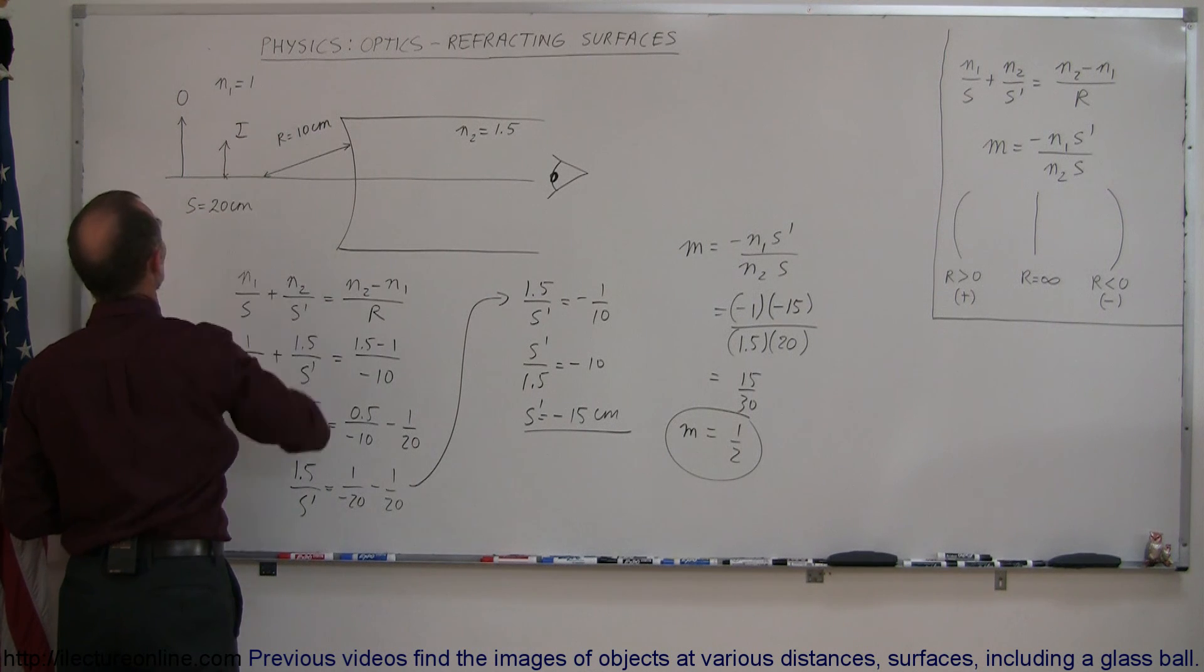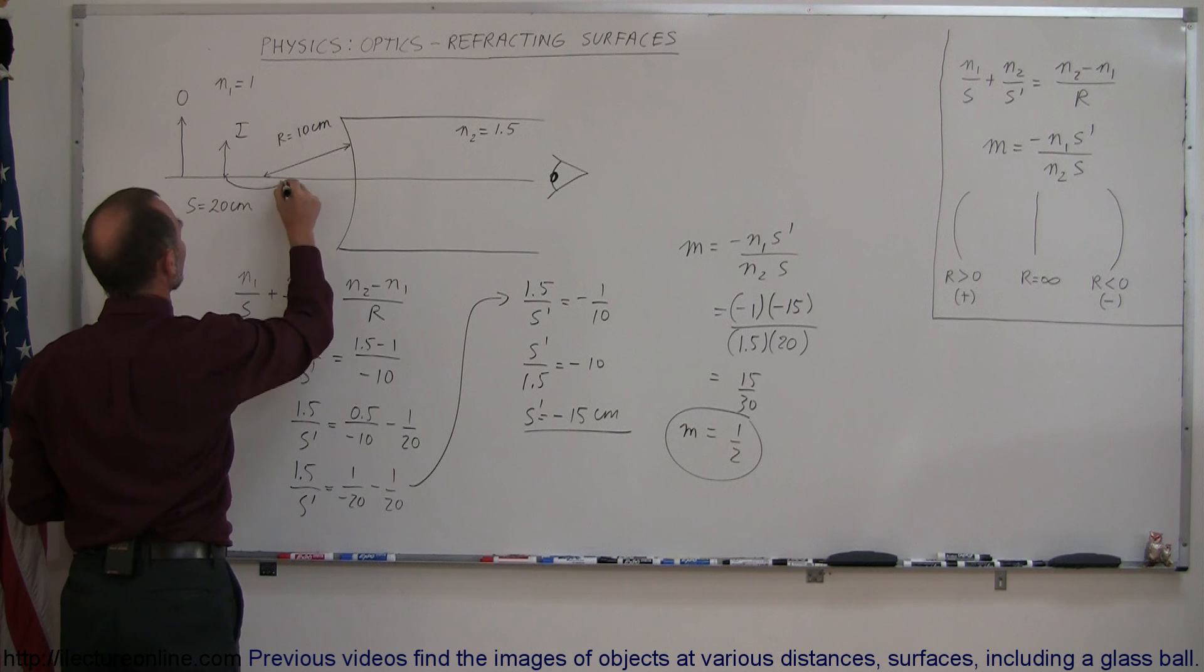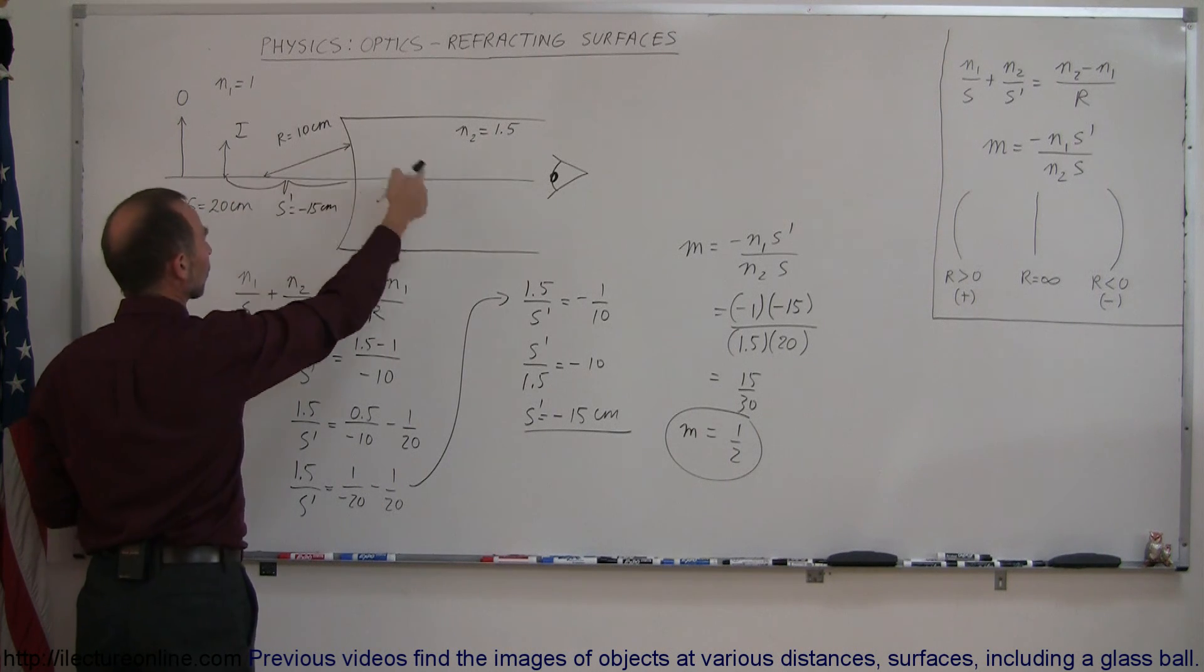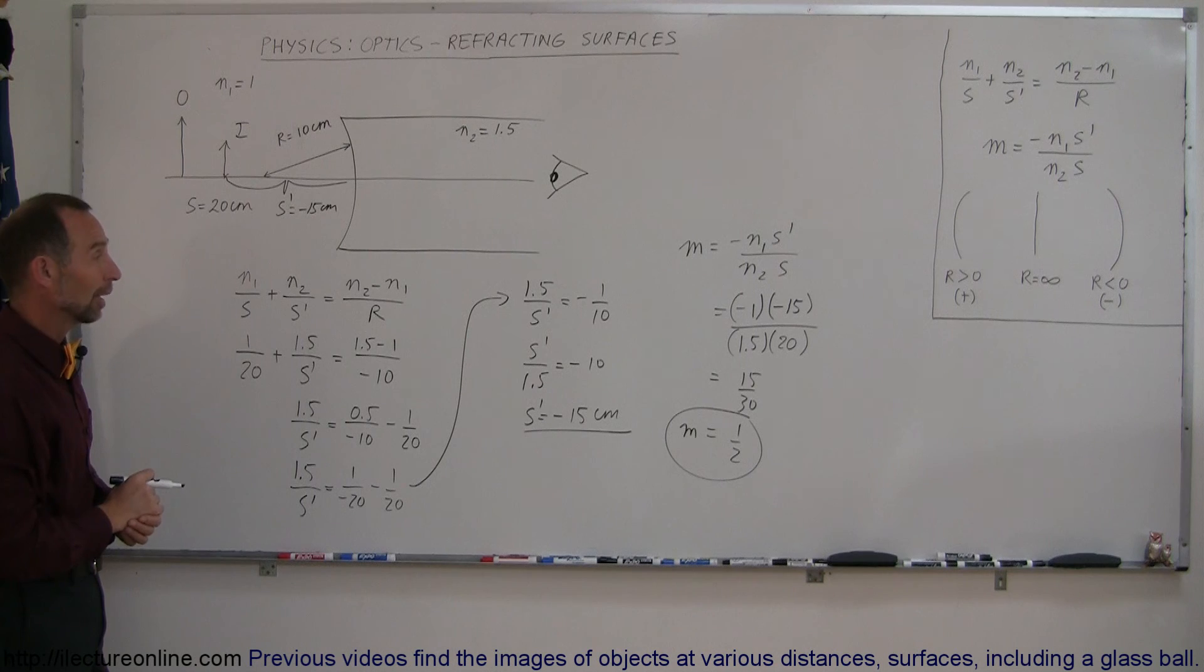There's the image, upright, half the size of the object, 15 centimeters away from the surface. So S prime equals minus 15 centimeters. Minus, of course, means that's in front of the surface, not behind the surface, and it's a virtual image. And that's how you do that problem.